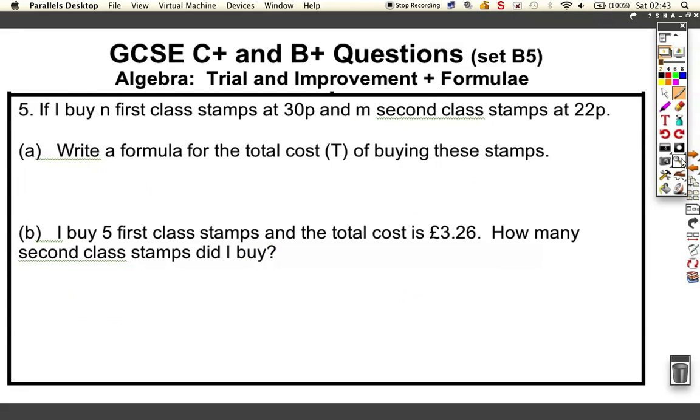And the last question. Now we're looking at writing our own formula from this information. Buy n first class stamps at 30p and m second class at 22p. Write a formula for the total cost. Well, if you're doing n first class stamps, you've got n × 30, which means that's the cost for the first class stamps. And then the cost for the second class stamps is 22m, m lots of 22p. That's your formula, quite straightforward.